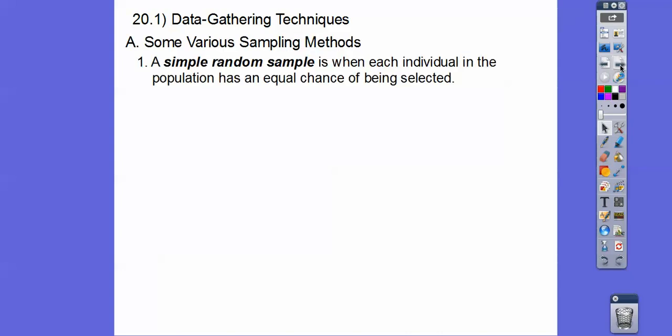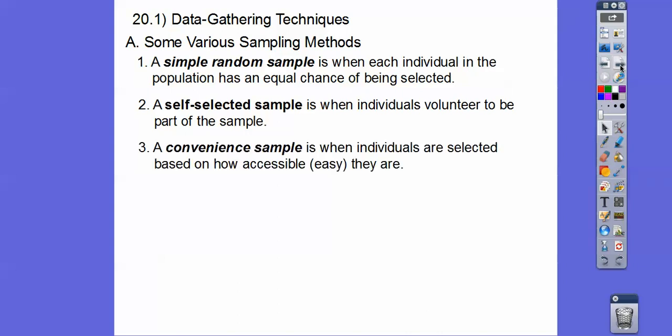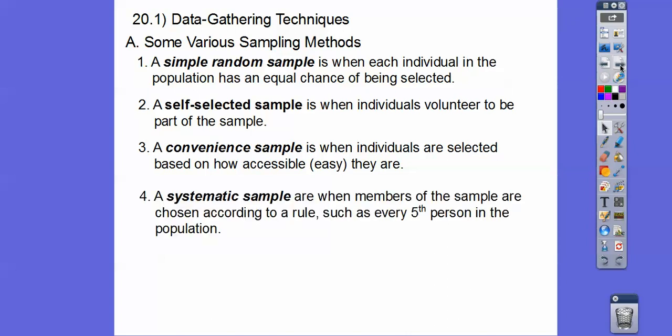So here's some various sampling methods. So a simple random sample is when each individual of the population has an equal chance of being selected. A self-selected sample is when individuals volunteer to be part of a sample. A convenient sample is when individuals are selected based on how accessible or easy they are. So for example, if you selected people at the mall, that's a nice convenient sample right there because there's people coming into the mall. So a systematic sample is when members of the sample are chosen according to a rule. So like say there's a thousand people and you chose every fifth person in that population.